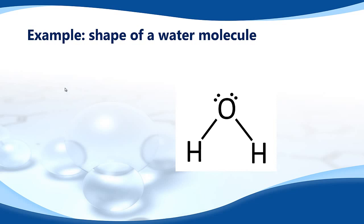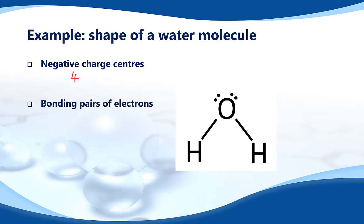Next is using VSEPR theory to predict the shape of a water molecule. We count the number of negative charge centers: there are two lone pairs of electrons and two single covalent bonds, giving a total of four negative charge centers. Bonding pairs of electrons: one, two.